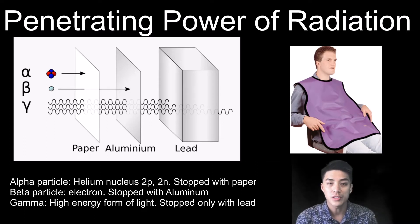Alpha radiation can be stopped with paper. Meanwhile, a beta particle is simply an electron traveling at high speeds. To stop beta radiation, you need at least aluminum.